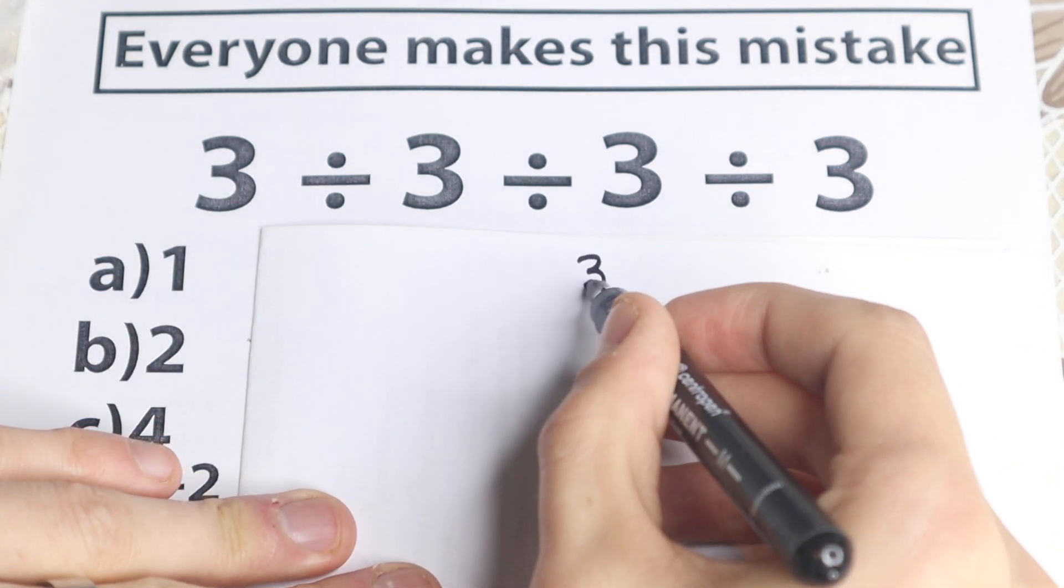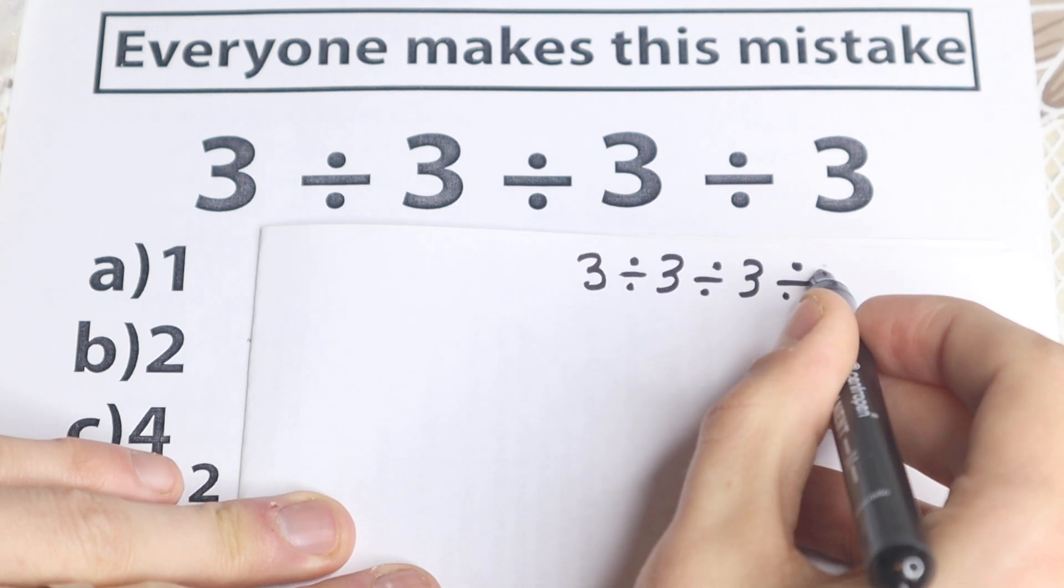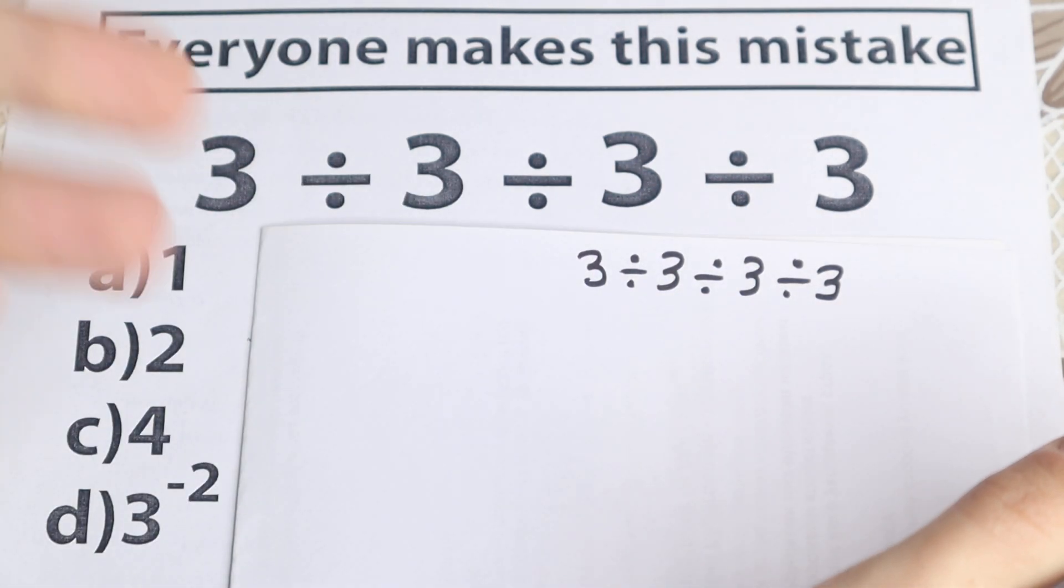So we have 3 divided by 3 divided by 3 and divided by 3. This is the first approach a lot of students solve it like that.